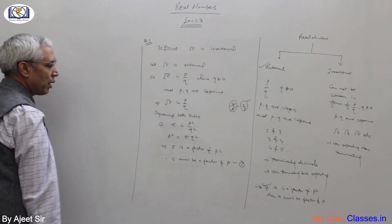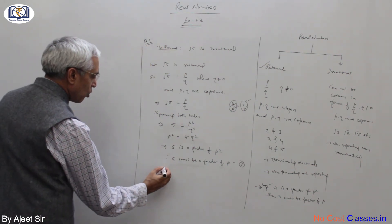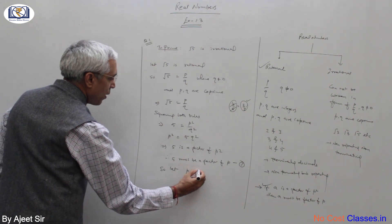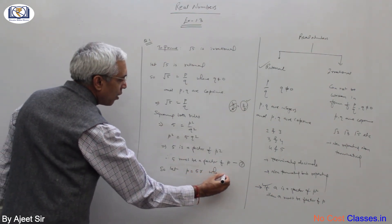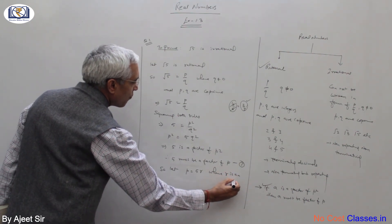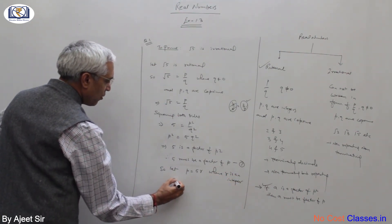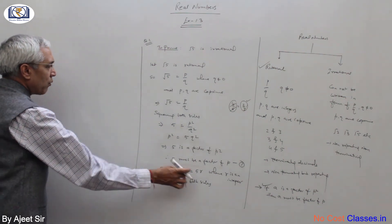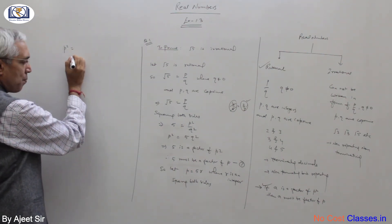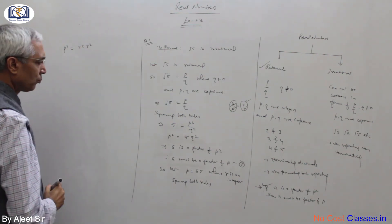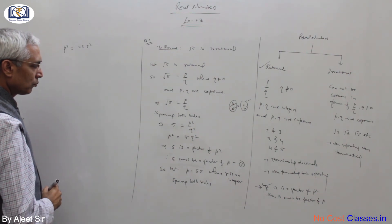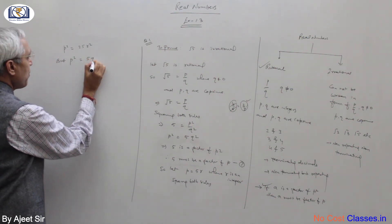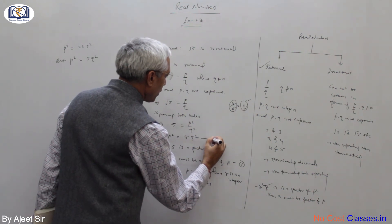Let p be equal to 5r, where r is an integer. Squaring both sides: p squared equals 25r squared. But p squared equals 5q squared from equation one.